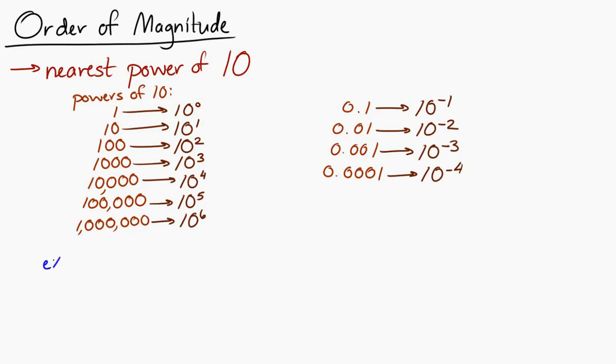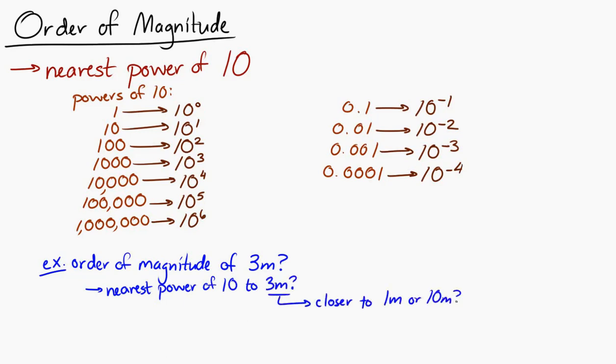So, for example, if I asked you, what's the order of magnitude of 3 meters? All I'm asking is, what power of 10 is closest to 3 meters? And 3 meters, let's see, is that closest to 1 or 10? Well, it's closer to 1. So, the order of magnitude is 1 meter. If you want to get fancy, that's 10 to the 0 meters.